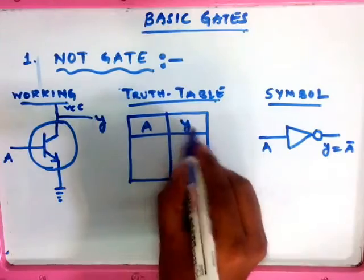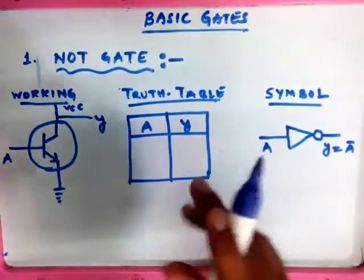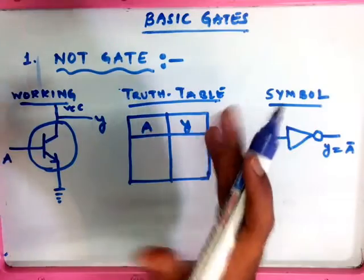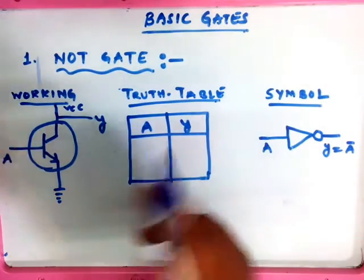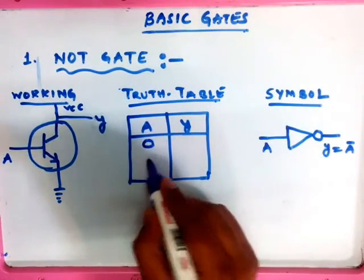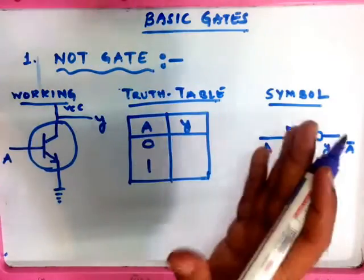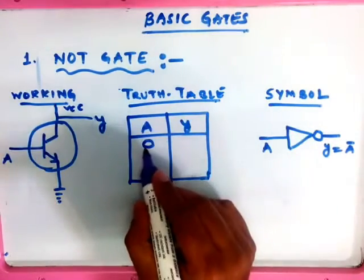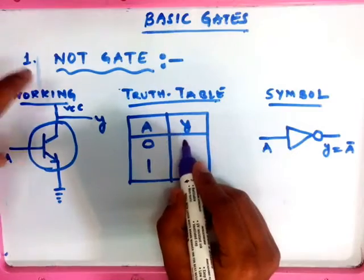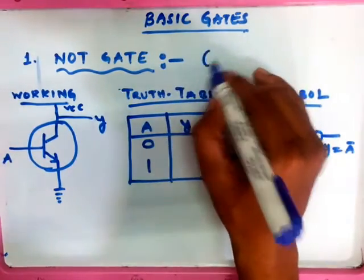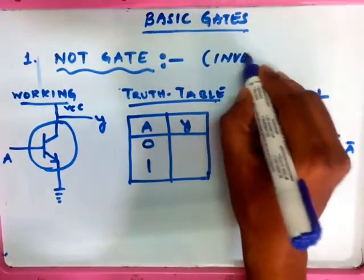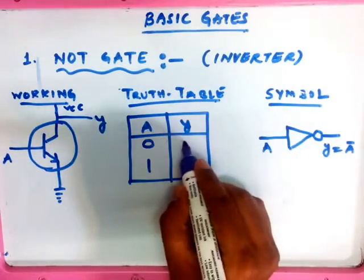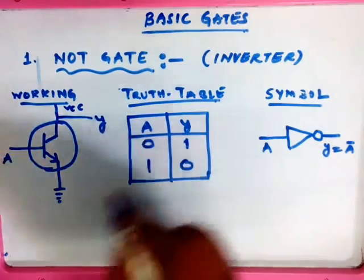A is the input and Y is the output. We have only two combinations since we have a binary system with only two numbers, 0 and 1. In the NOT gate, the output is the inverse of the input — the NOT gate is also called an inverter. Remember this alternate name: inverter. When input is 0, output is 1; when input is 1, output is 0.